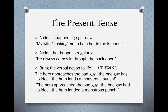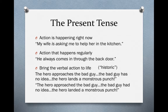These are called the historic present. What often happens is translators will opt for a historic translation — that is, they'll use the past tense — because it really happened in the past, and using only present tense verbs can sound odd. So the historic present would be translated as: 'The hero approached the bad guy. The bad guy had no idea, and the hero landed a monstrous punch.' This is a common use of the Greek present tense verb, especially in the Gospels. So the present tense can indicate action happening right now, action that happens regularly, or bring the verbal action to life as a historic present.